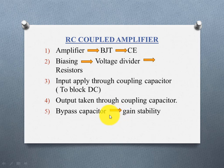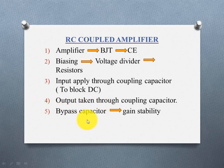That parallel capacitor is the bypass capacitor. It is connected in parallel with the emitter resistor. The bypass capacitor stabilizes the input and output by bypassing the AC component across the emitter resistor.